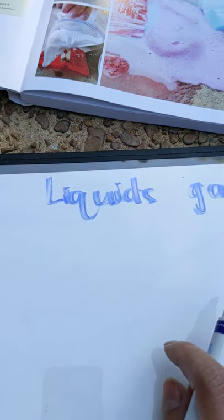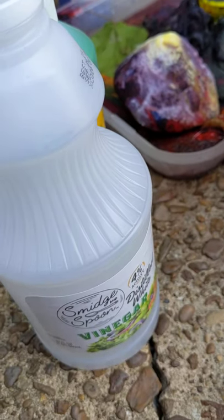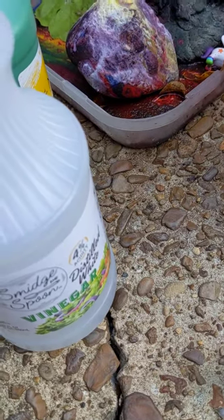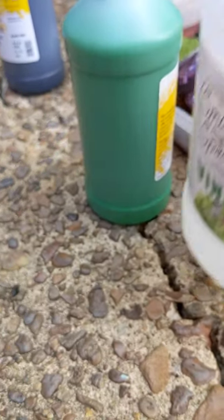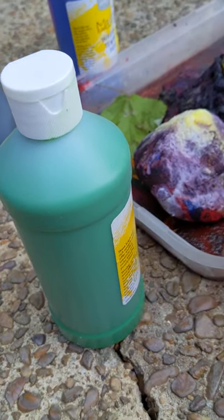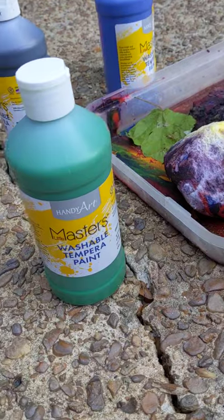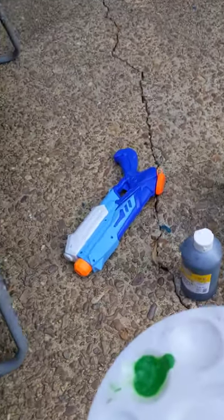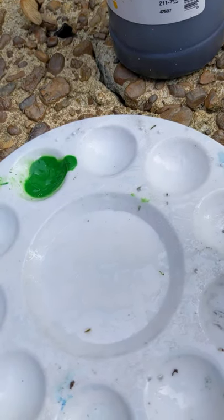Let's explore another state of matter: liquid. Liquid takes the shape of the container. You can feel it, you can see it, but it does not have its own shape. Vinegar takes up the shape of this container. If I pour this vinegar into this bowl, it will take the shape of this bowl. Liam's paint also takes the shape of its container — if I pour this paint into his little artist tray, the paint takes the shape of whatever the container is.